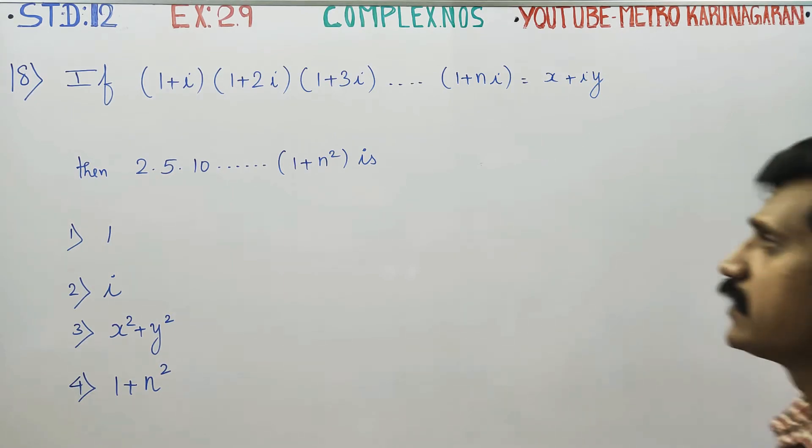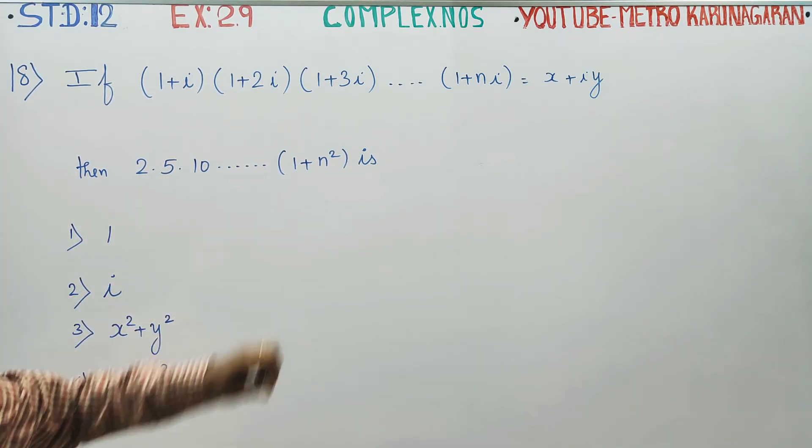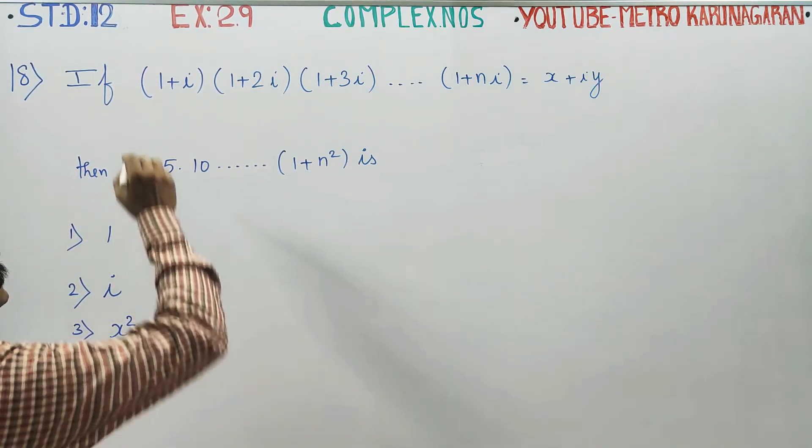choose the best answer. You have to find the value of 2 into 5 into 10 dot dot dot up to n square. This is my question.